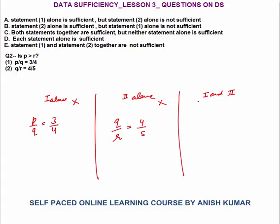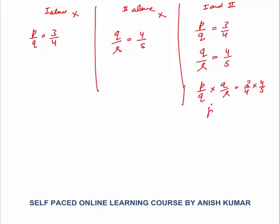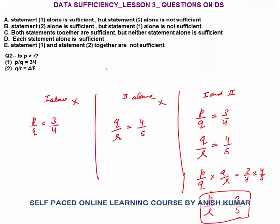We combine when both statements alone are not sufficient. Combining: assume p/q = 3/4 and q/r = 4/5. Multiply both equations: p/q times q/r equals 3/4 times 4/5, giving p/r equals 3/5. So from combining, p/r = 3/5.